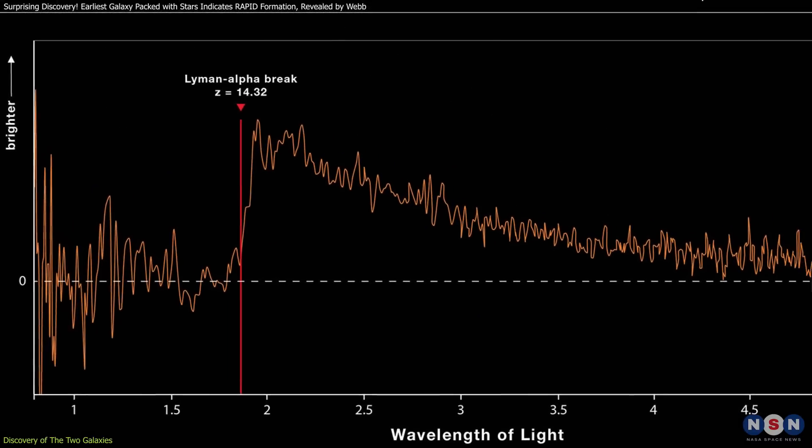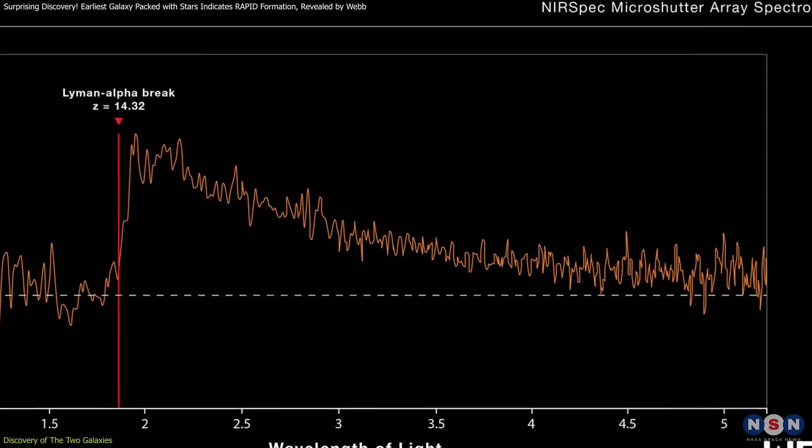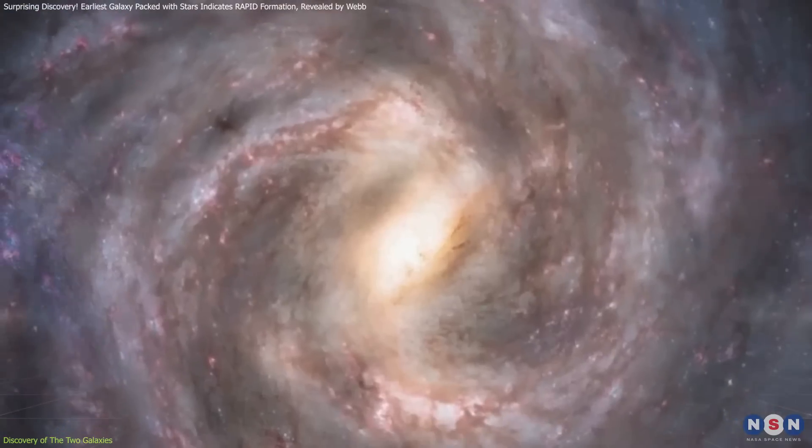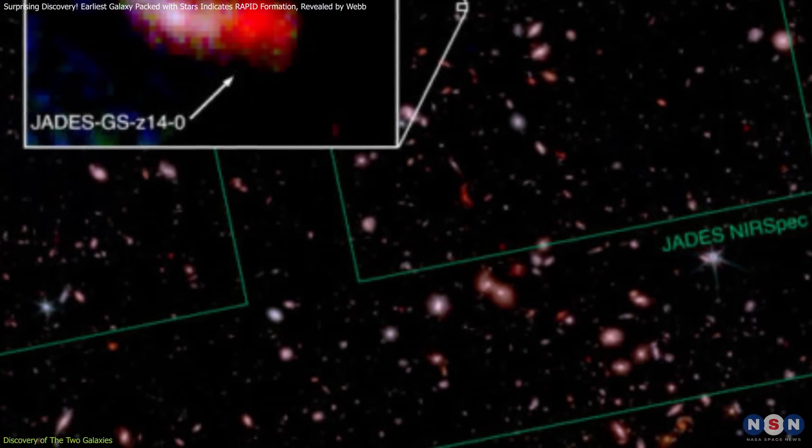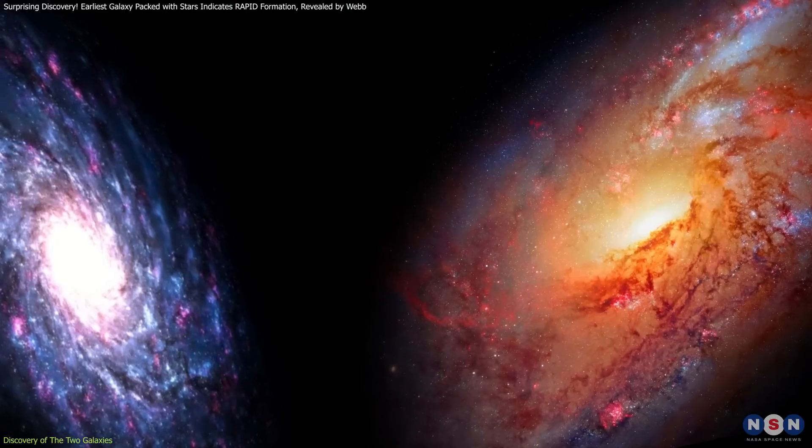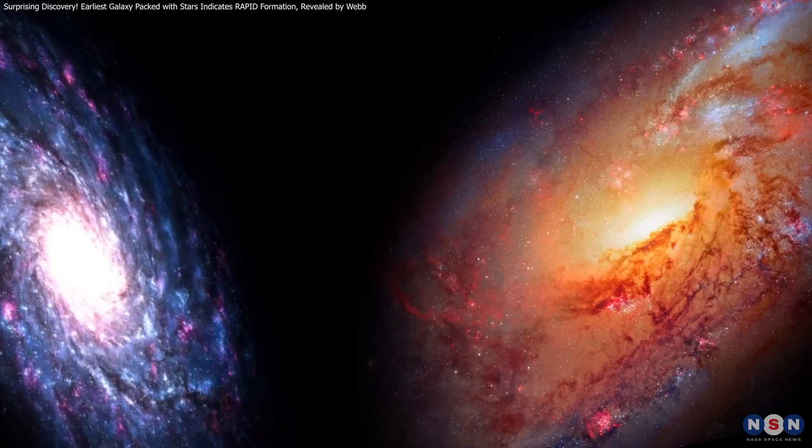The journey to this discovery wasn't straightforward. Initially, the JADES team had to ensure that the galaxies weren't merely neighbors to a foreground galaxy. These images, combined with specialized filters to isolate early galaxies, confirmed the extreme distances of the two JADES galaxies.